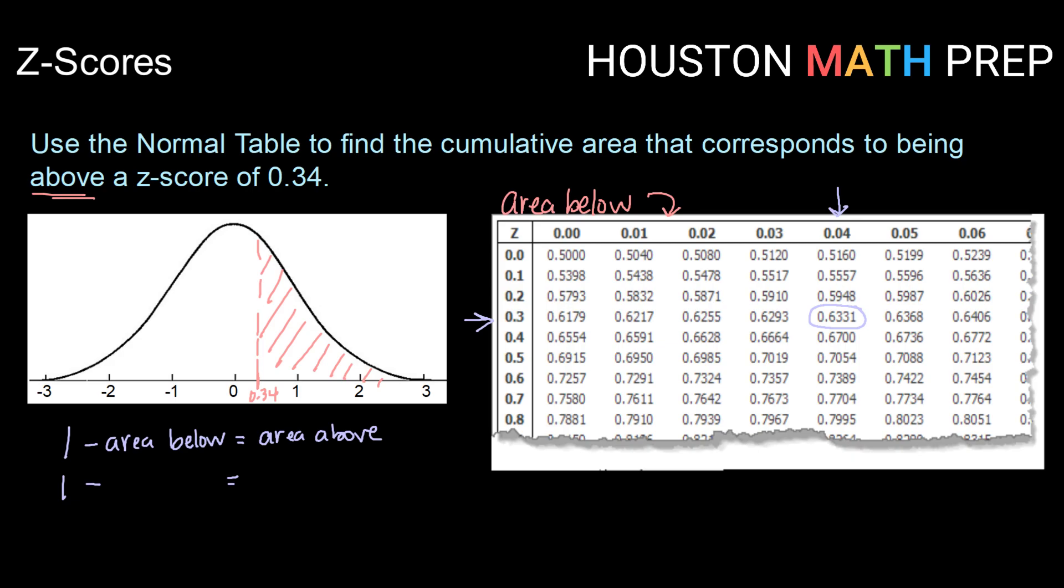So now I want to do 1 minus 0.6331, which gives me a value of 0.3669. So the area above a z-score of 0.34 is found by doing 1 minus the area below 0.34 and that gives me 0.3669.